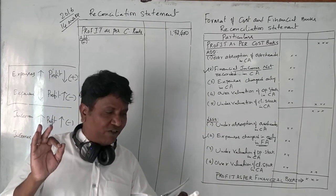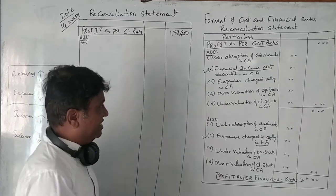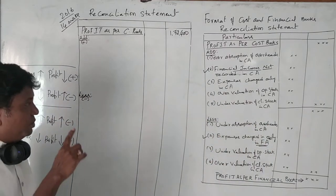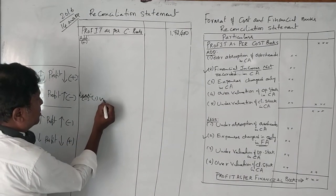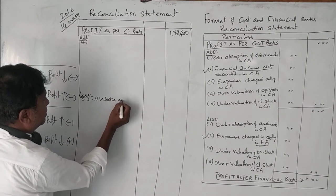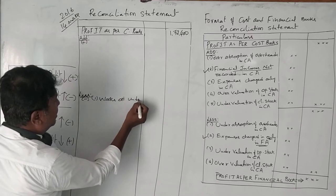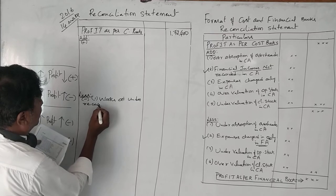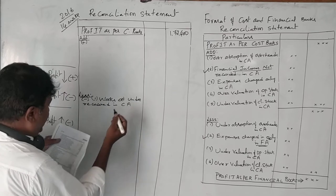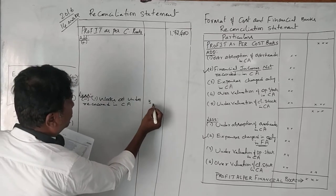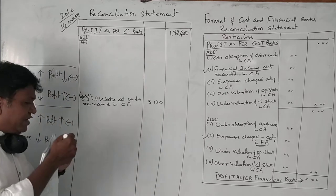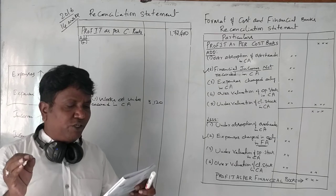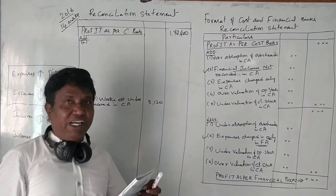Works overhead means factory overhead — it is under-recorded. Under absorption of overheads should be deducted. So works overhead under-recovered in cost accounting is 3,120 rupees. That is clear.